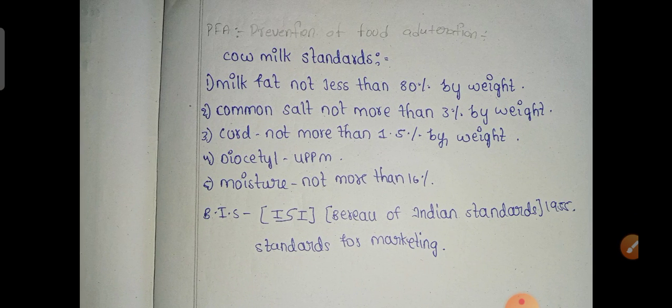PFA — Prevention of Food Adulteration Act standards. Cow milk standards: Milk fat not less than 80% by weight, common salt not more than 3% by weight, moisture not more than the specified limit per BIS — Bureau of Indian Standards.